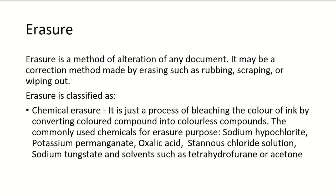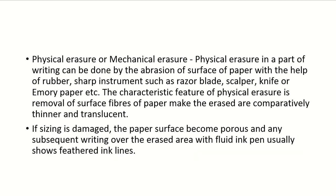Chemical erasure bleaches the colour of the ink by converting the coloured compound into a colourless one. Chemicals used for erasure include sodium hypochlorite (liquid bleach), potassium permanganate, oxalic acid, stannous chloride solution, sodium tungstate, and solvents such as tetrahydrofuran or acetone. Physical or mechanical erasure works by abrasion of the paper surface using rubber or sharp instruments, making the paper thinner and translucent. When fluid ink is written over such an erased surface, the ink will feather.